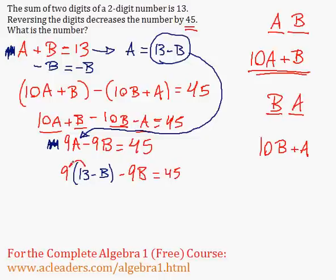Now I can distribute the 9. 9 times 13 is 117. 9 times negative B is negative 9B, minus 9B equals 45.